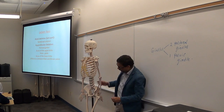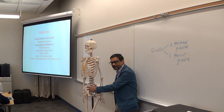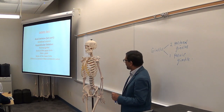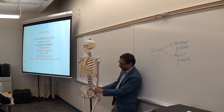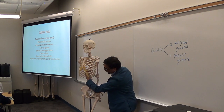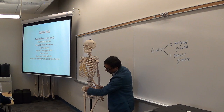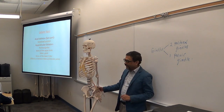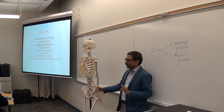First, same as the pectoral girdle: connecting the lower limb bones to the axial skeleton, and securing the lower limb bones. Another function of the pelvic girdle is transmitting the body weight. Most of the body weight is transmitted through the vertebral column, which is attached to the hip bones. So from the vertebral column, the body weight is transmitted to the pelvic girdle and then to the legs.